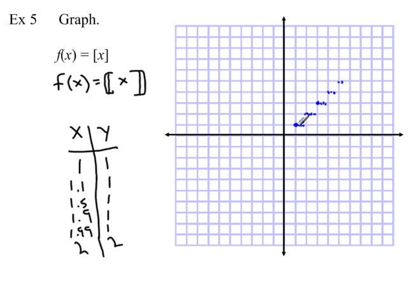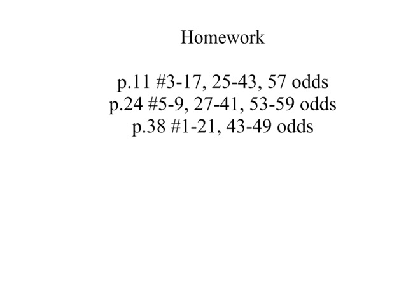If x is 1.99, y is still 1 — up to but not including x equals 2, so I put an open circle there. On the left side of every step there's a closed circle; on the right side, an open circle. This step function continues in both directions, including the negative direction. That is the greatest integer function and an example of a step function. That wraps up the first set of notes — make sure you complete the homework, then we'll move on to the second set.